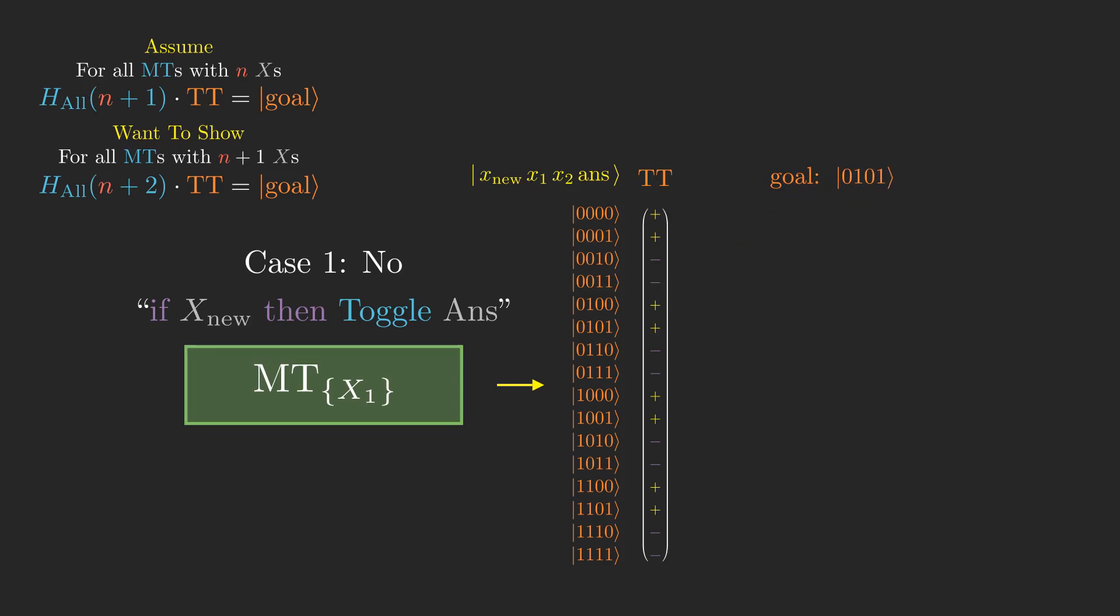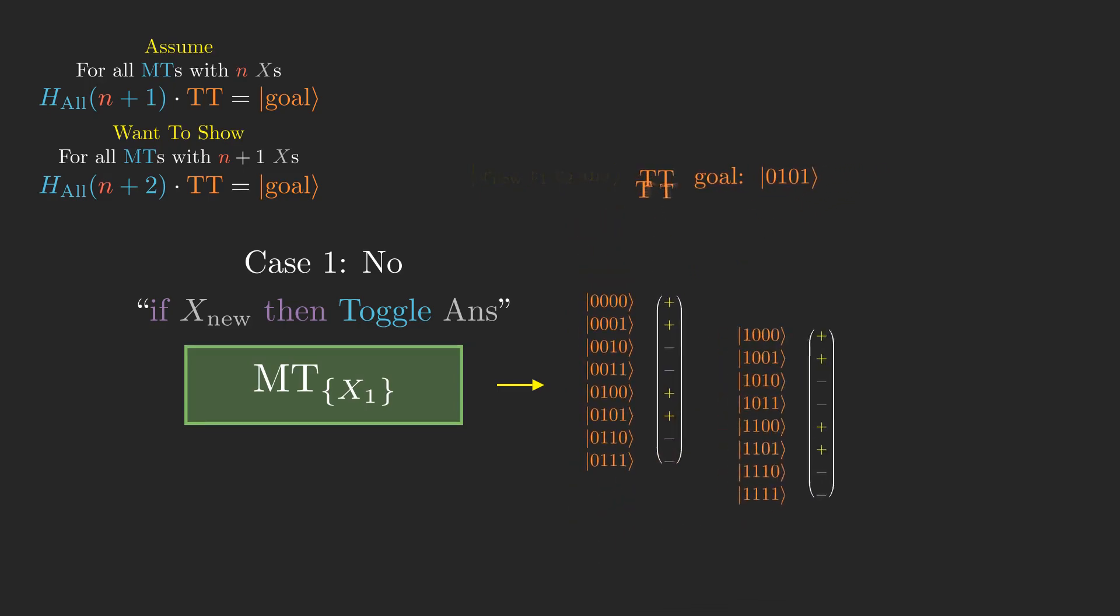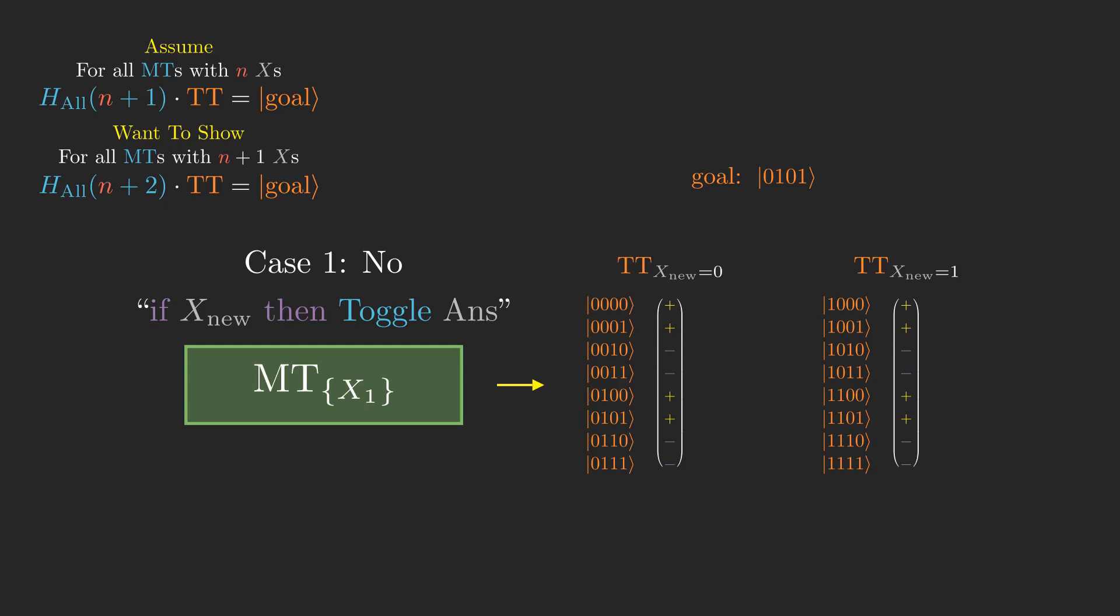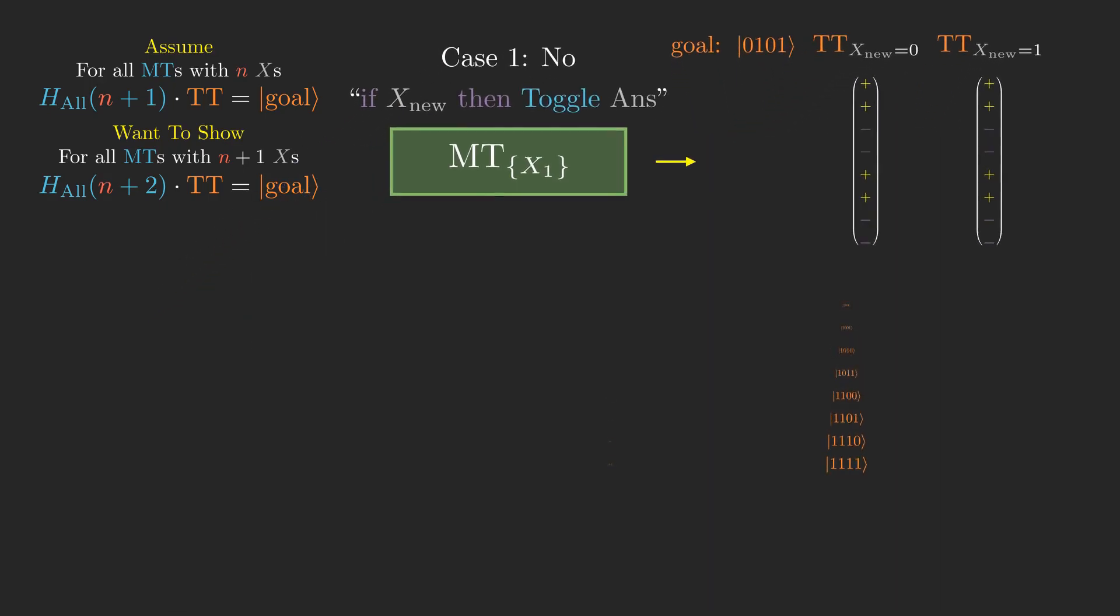Here, we can split tt in half based on whether the x new bit is 0 or 1. We'll call the first half tt x new equals 0, and the second half tt x new equals 1. Notice that these two halves are actually equal to each other in this case, since the non-existence of a line in mystery toggles that says if x new then toggle answer means x new being 0 or 1 has no effect on the truth table state. Now let's see how the equation we want to prove holds up.